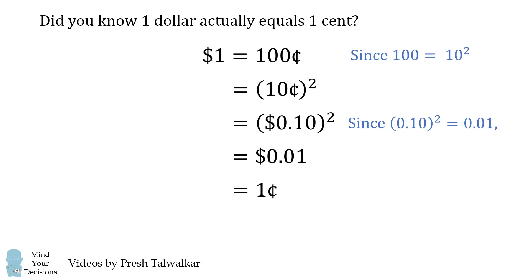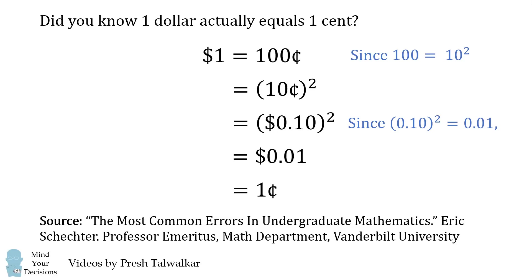Now, of course, this is just an April Fool's joke. This false proof comes from "The Most Common Errors in Undergraduate Mathematics," written by Eric Schechter, who's a professor emeritus of the math department at Vanderbilt University. No doubt you'll be able to see where the mistake is in this false proof, because every single math teacher has seen a student submit a proof with this kind of error. Can you figure it out?